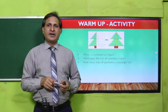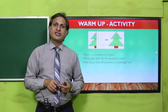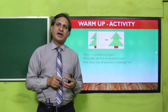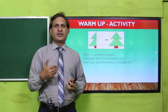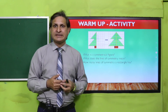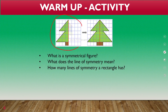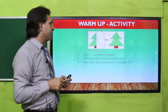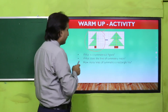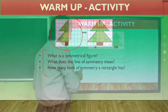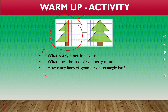अब आ जाएं activity की तरफ। इसमें क्या करना है — यह worksheet है। आपकी teacher हर student को class में provide करेंगी। करना क्या है: आपने square grid को observe करना है और इसको complete करना है कि दूसरी side पे कौन सी shape बनेगी। और इन questions के answers अपनी notebook के ऊपर लिखने हैं।